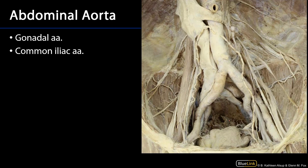The gonadal arteries supply the gonads with blood as direct branches of the abdominal aorta and can be seen descending down into the abdominal cavity. We can also see the relationship between the SMA and the left renal vein, which crosses the abdominal aorta. Here is the IMA again, and then the bifurcation of the abdominal aorta into the common iliac arteries at approximately the level of L4. Those common iliac arteries divide into the external iliac and internal iliac arteries, as we'll discuss when covering the arteries of the pelvis and lower limb.